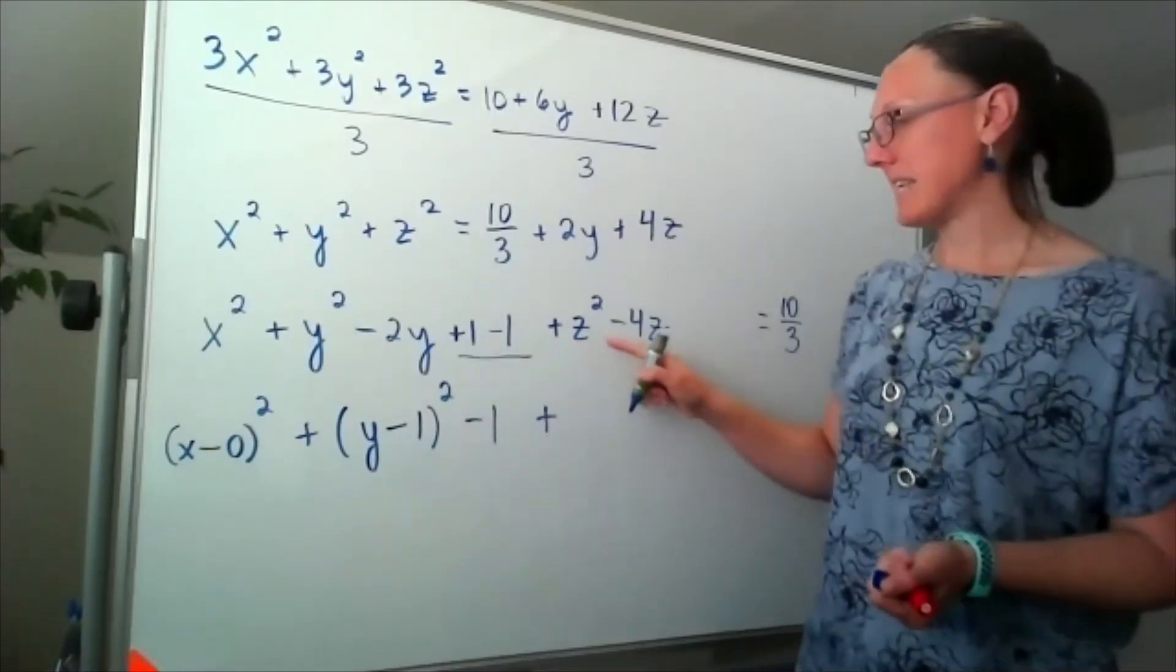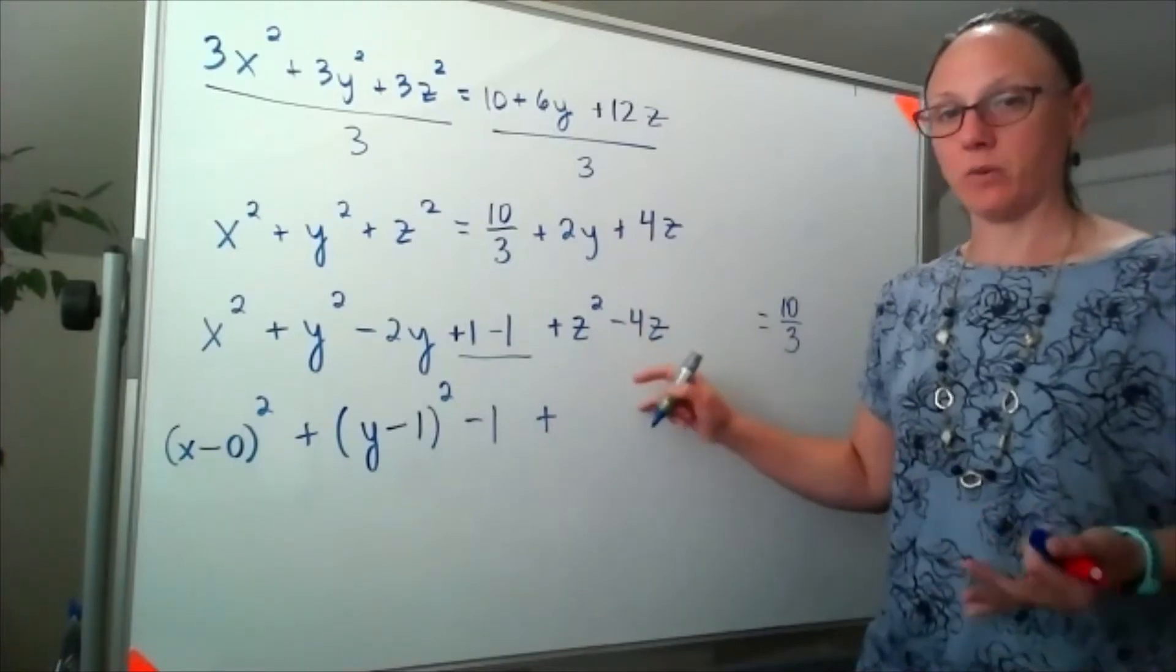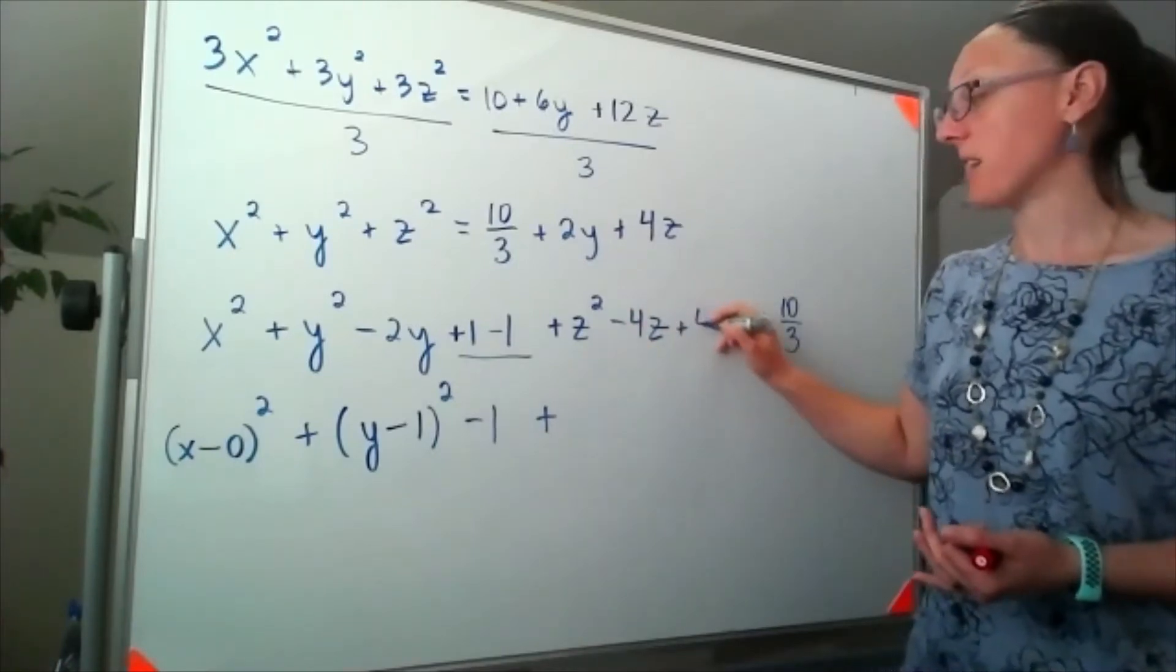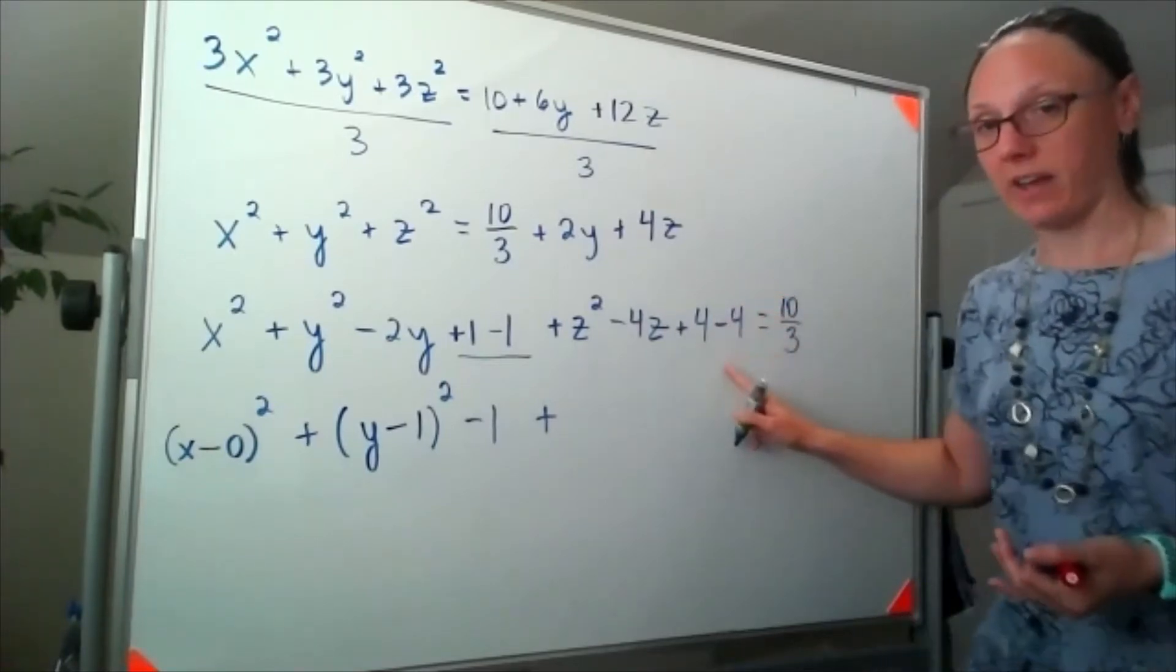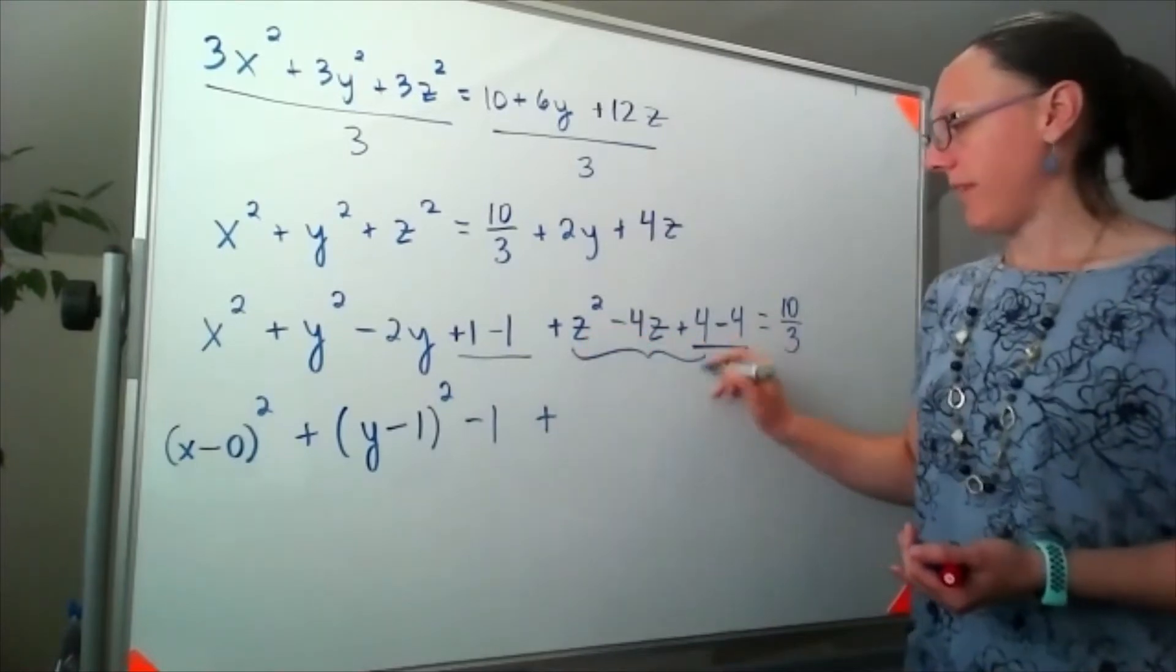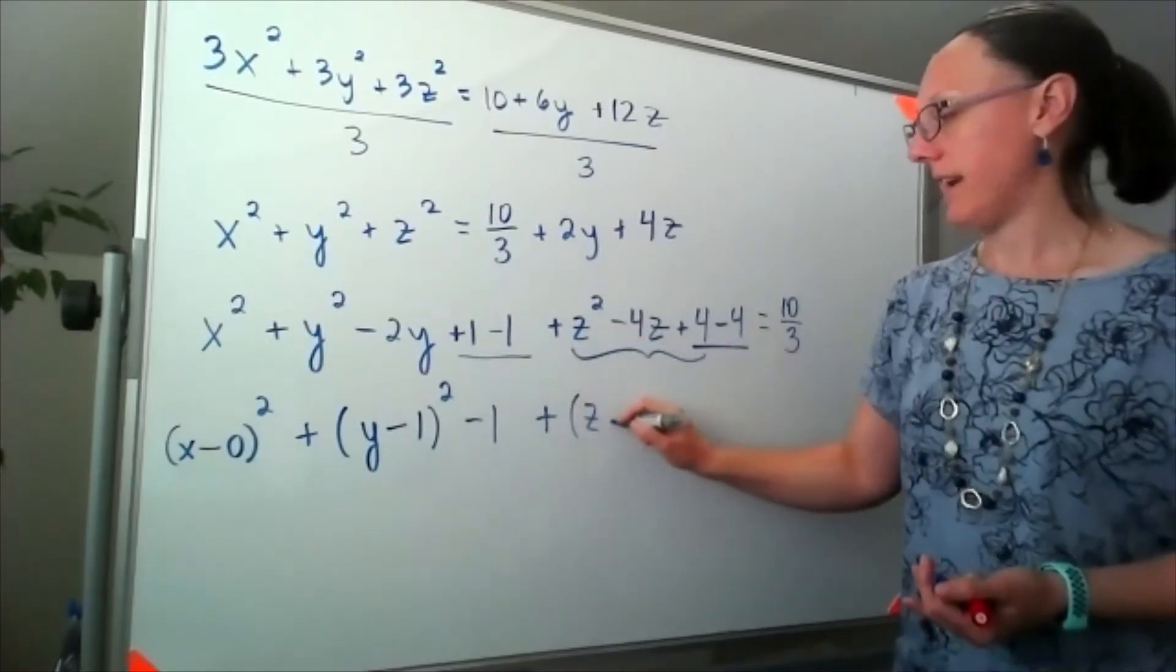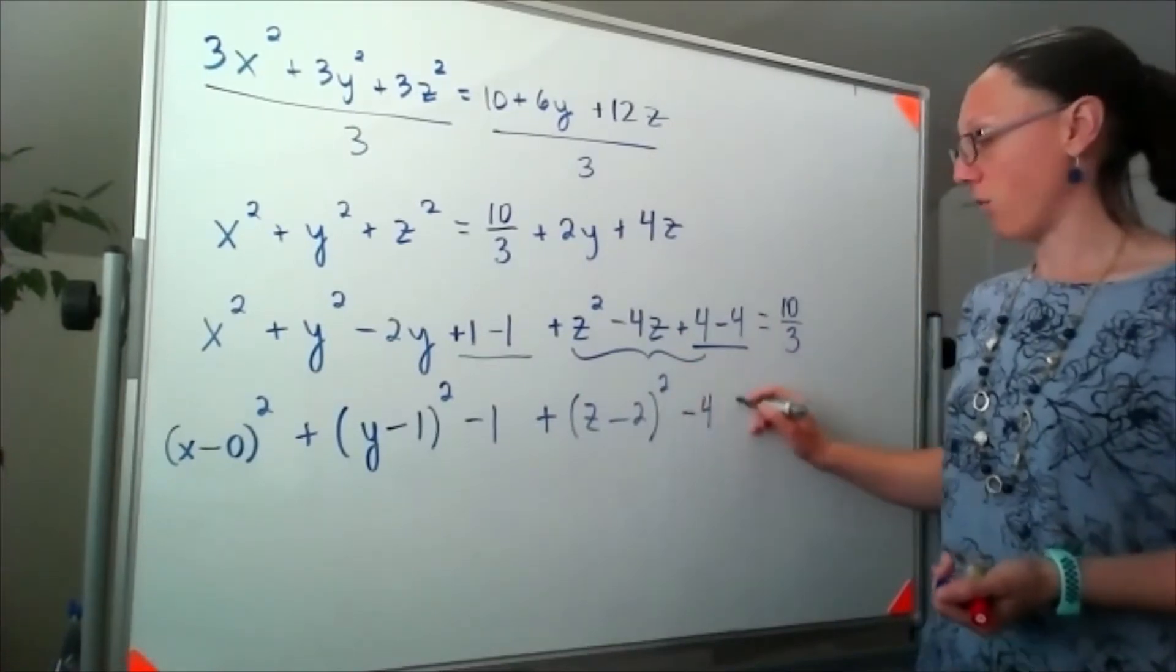Now over here for my z's, half of negative 4 is negative 2, and if we square that, that's going to be a plus 4, and then I'll also subtract off a 4, so that I'm not changing the problem. That will get grouped together as z minus 2, whole thing squared, and then minus a 4.